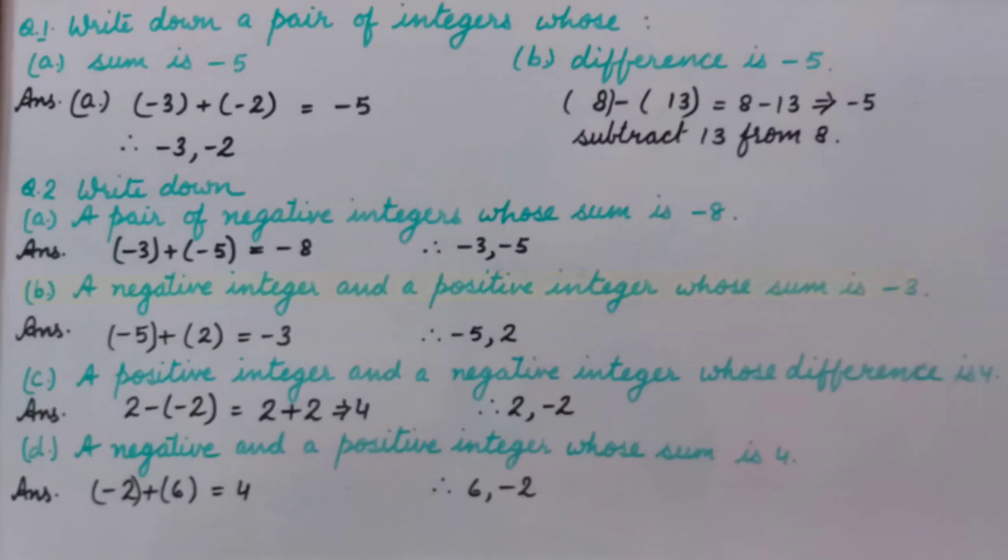B part, a negative integer and a positive integer whose sum is minus 3. I have taken minus 5 and 2 as one negative and one positive integer to get sum minus 3. Again, you can take other pairs.